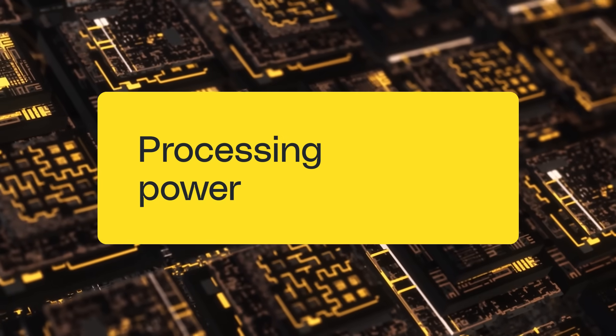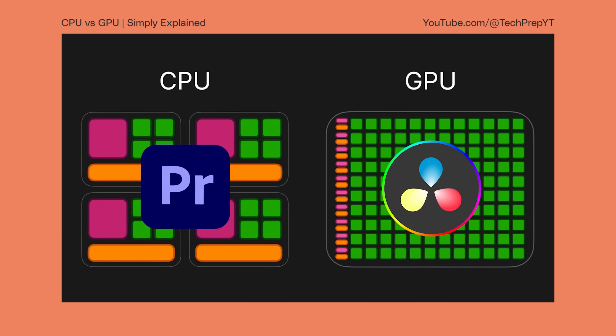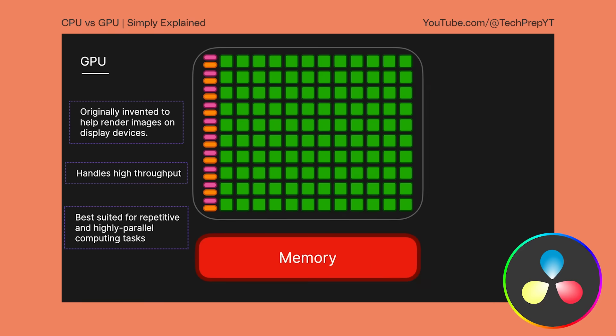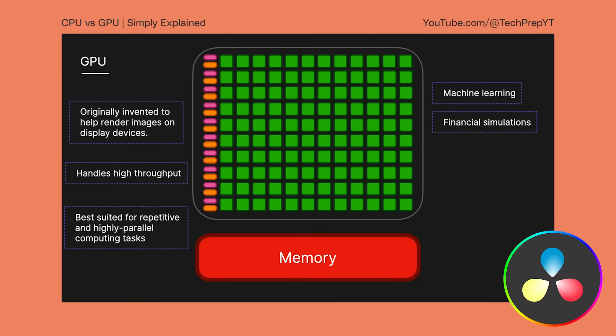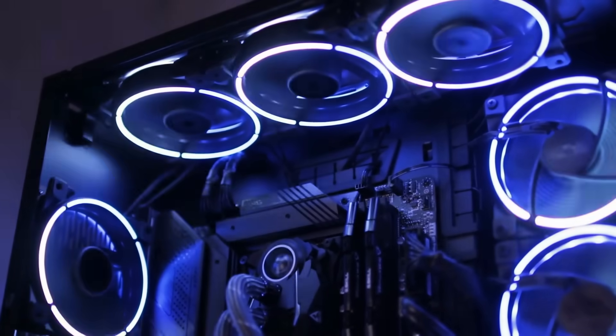Now let's talk about how these programs run. Depending on the footage you're editing and the effects you're applying, both Premiere Pro and DaVinci Resolve can be quite taxing on your system. However, the way they harness that power is slightly different. Premiere Pro relies more on CPU processing than GPU processing — while it does use both, it's a CPU-intensive application. DaVinci Resolve, on the other hand, relies more predominantly on GPU processing power. If you're from a gaming background and already have a powerful graphics card, you might be better positioned to work efficiently with DaVinci Resolve.